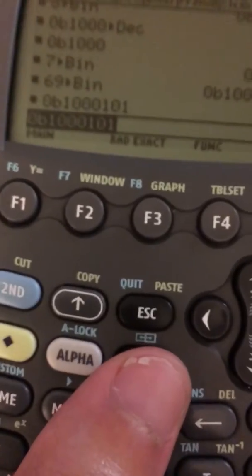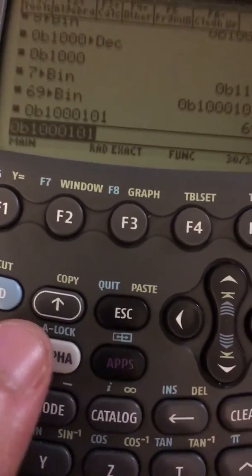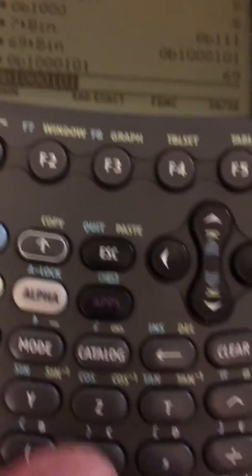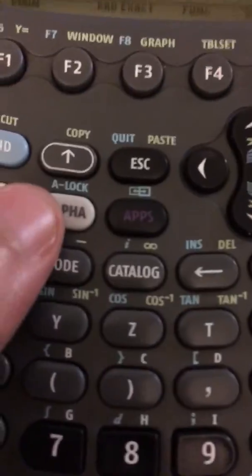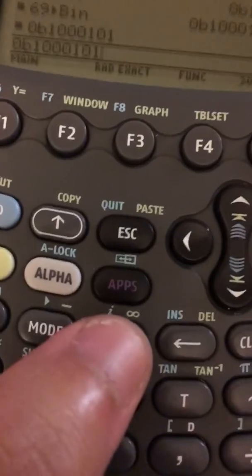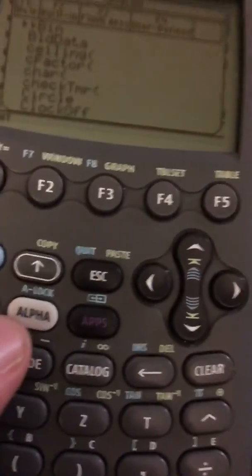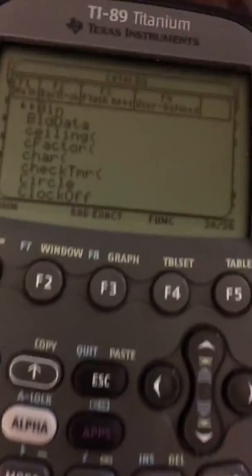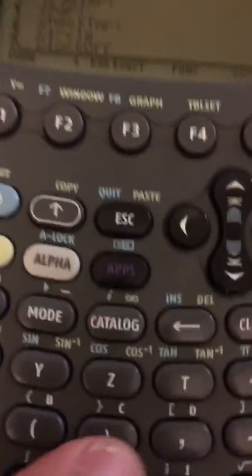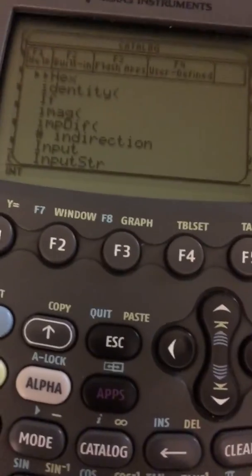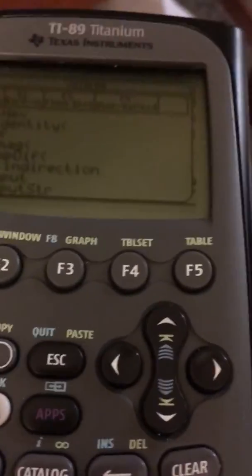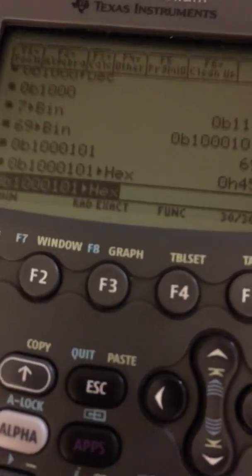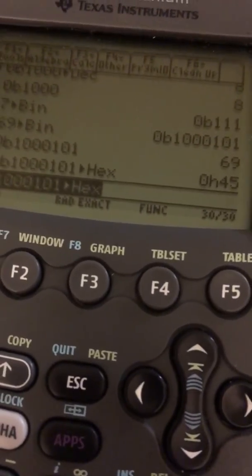Now if you want to do hexadecimal, then all you got to do is the same thing. So let's do it to the binary number. Let's go to catalog and this time we're going to go alpha and then look for the letter H that's white. Takes me about two times to do it for some reason, and then boom, press enter and you got the operation right there. Press enter again. There's the hexadecimal representation of 69 right there.